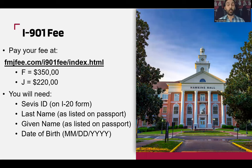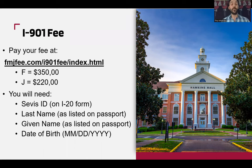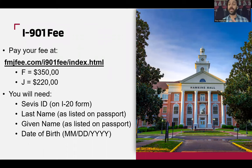Once you get your I-20 or DS-2019, the first step is to pay the I-901 fee at the SEVIS website. I'll show screenshots of what the website looks like so you know you're in the right place. For F students, the fee is $350; for J students, it is $220.